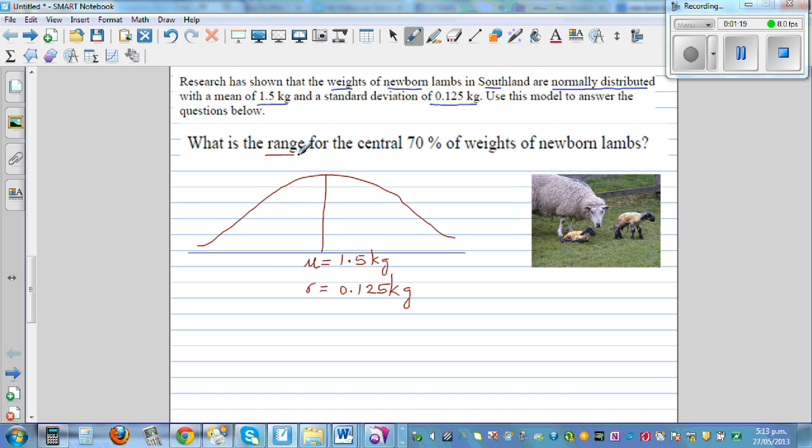So the question is what is the range of the central 70% of the weight. To the right of mean you have 50%, to the left of mean you have 50%. So the middle 70% would be between two values. This is x1 and this is x2. This area is 0.35, and this is 0.35. The total area is 0.70. To the right this area is 0.5 minus 0.35, so this is 0.15.